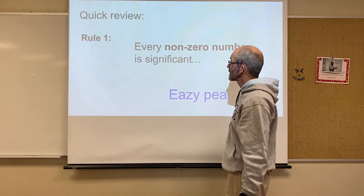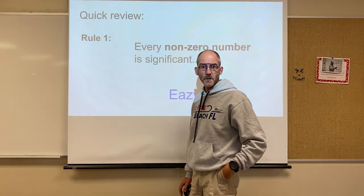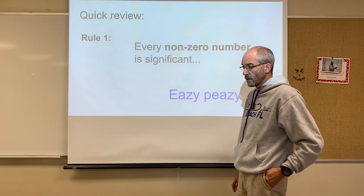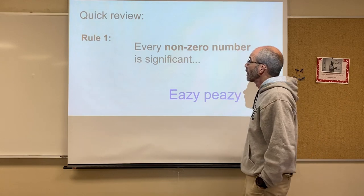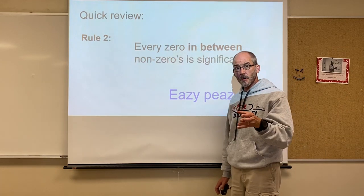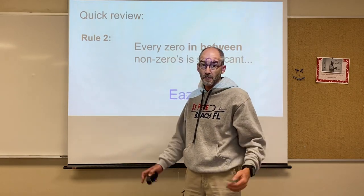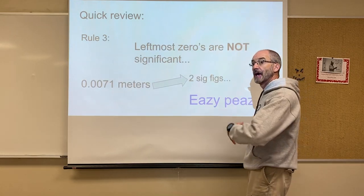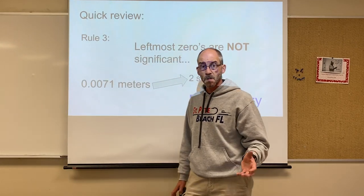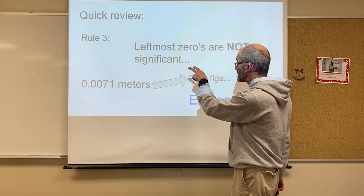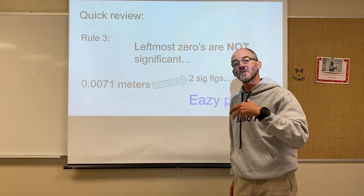Let's review. Rule one: every non-zero number is significant — easy. Rule two: a zero in between non-zeros is significant. Rule three: leftmost zeros acting as placeholders are not significant. So with a number like 0.0something, you only have the significant non-zero digits to count.